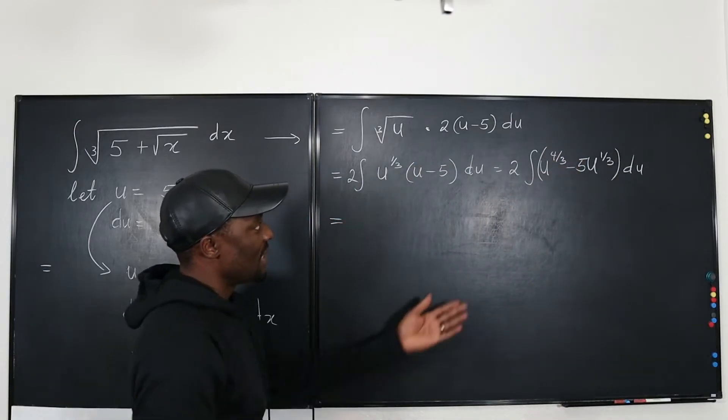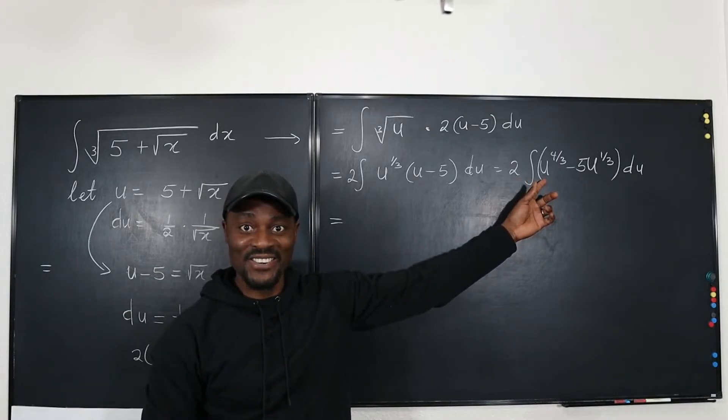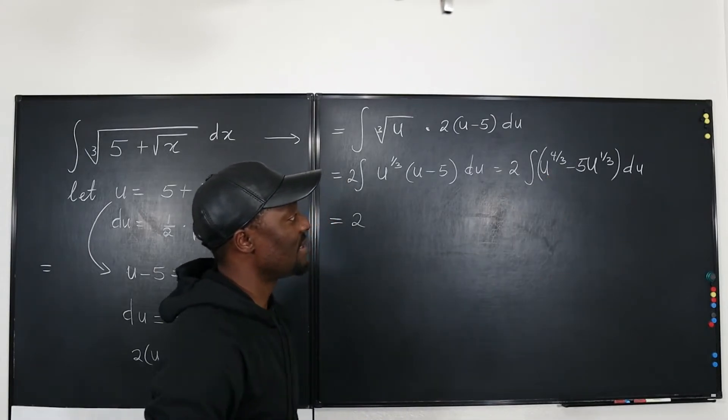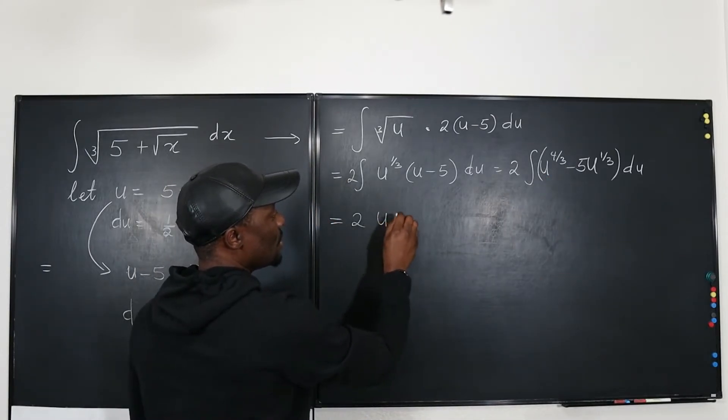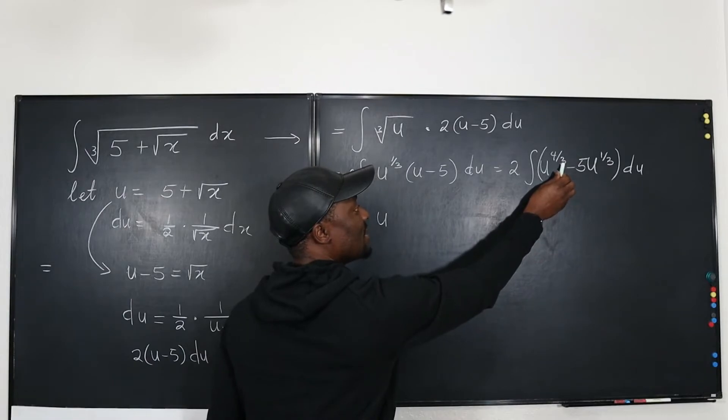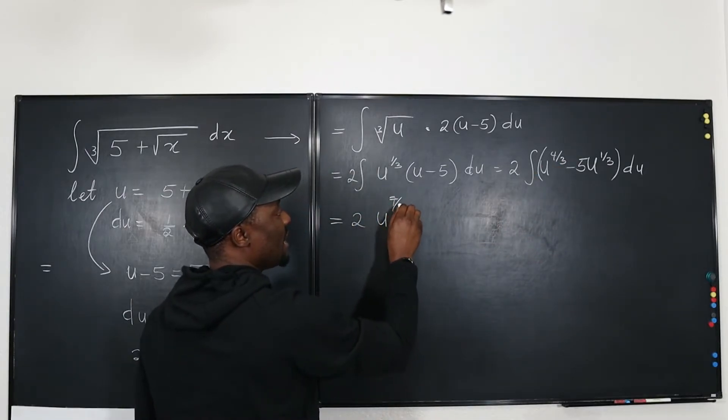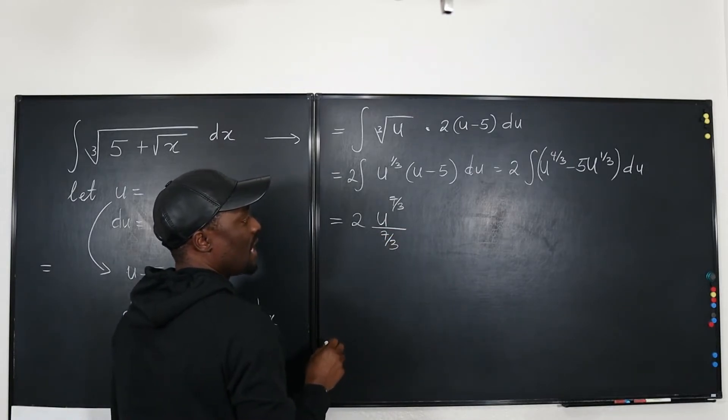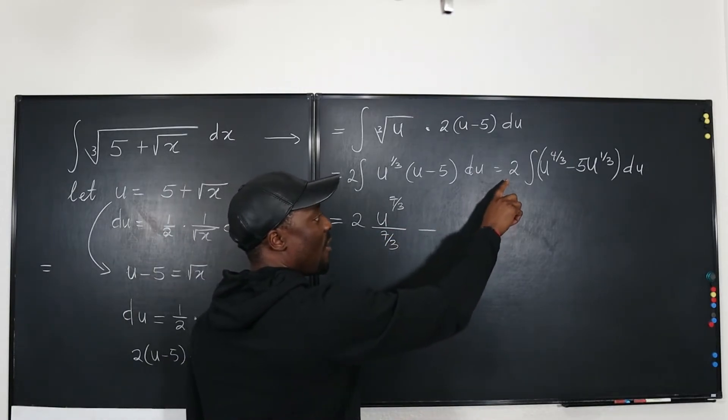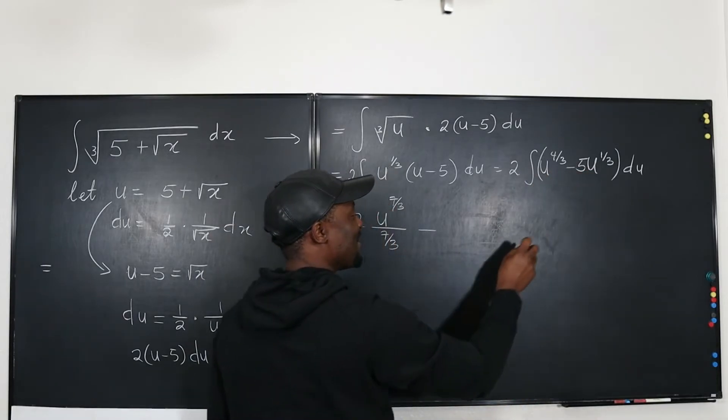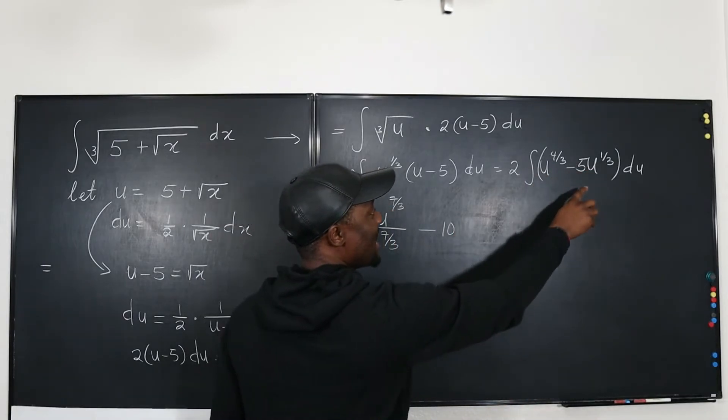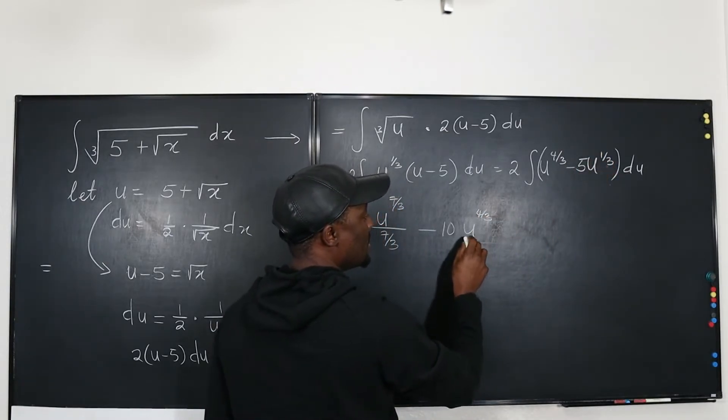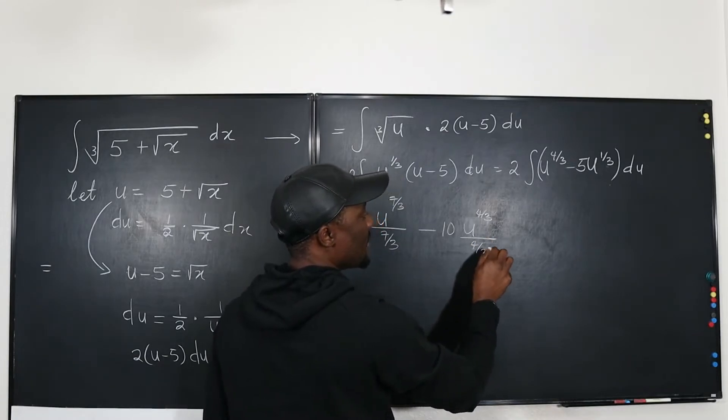So now we have something that's easy to integrate. I'm going to leave the 2 outside, and then I'm going to integrate this. If I integrate this it's going to be u to the - remember what I said, just add 3 to 4, you're going to get 7 and keep the denominator, and then you divide by 7/3 also. Minus, well, I'll have to distribute the 2 again. So 2 times 5 is going to be minus 10. And if I integrate this it's going to be u to the 4/3 divided by 4/3. And that's it plus c.